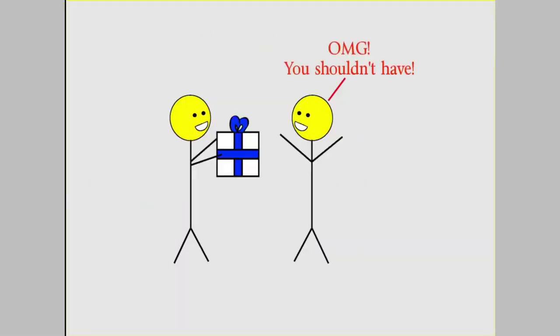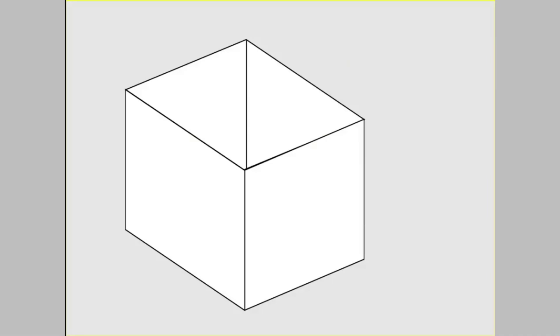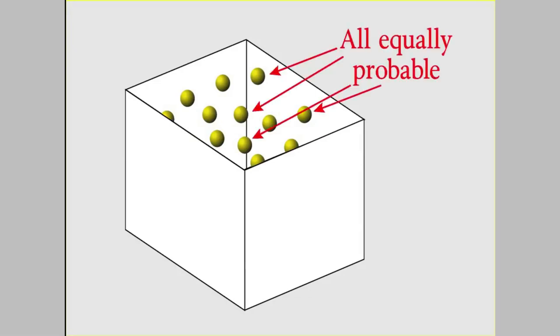Imagine I gave you a box and told you there was a particle in it, and your job was to guess where the particle is. If that's all I told you, you might think the particle is equally likely to be anywhere in the box. So without more information, you couldn't really narrow down where it is.